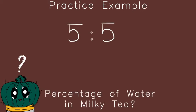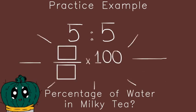Let's go through a practice example. Let's say you are given the following ratio: 5 to 5, and you want to find out the percentage of water in this ratio. It's the milky tea we talked about previously. This is the water part, and the other portion is the milk.